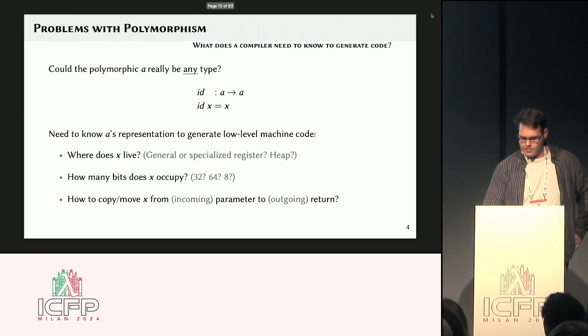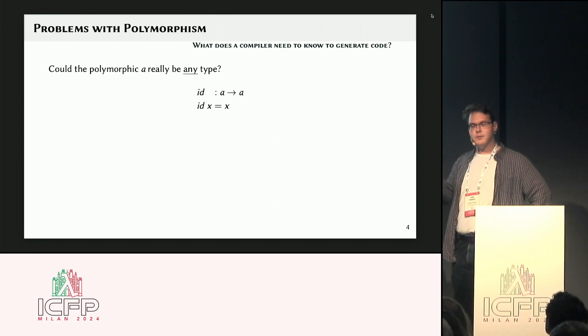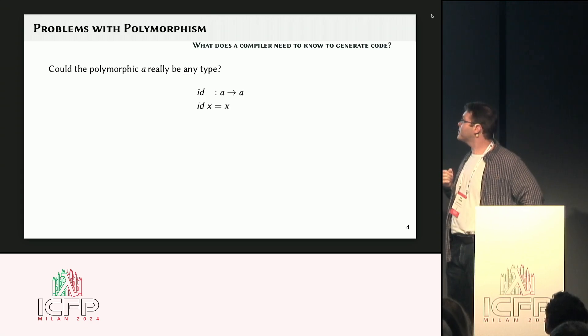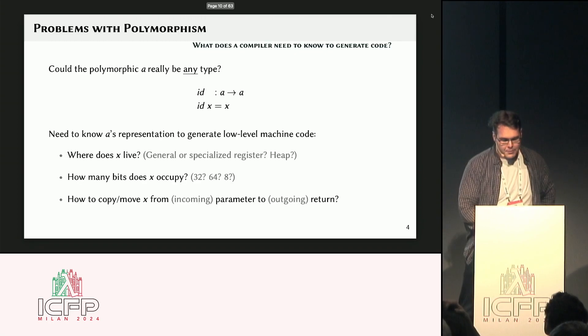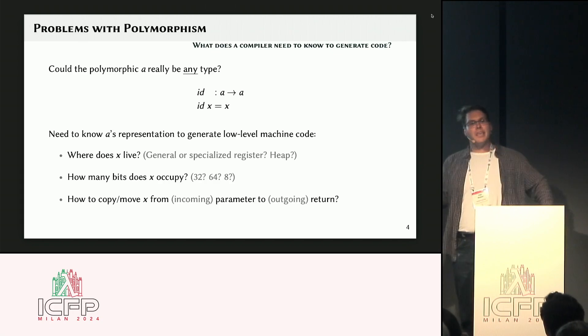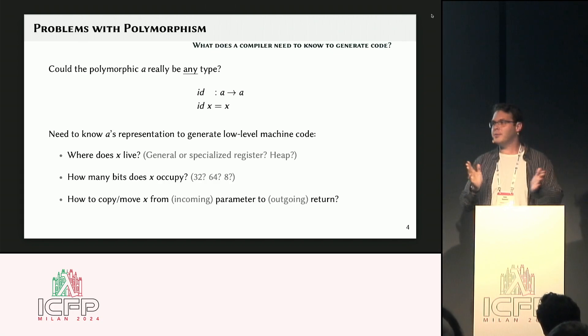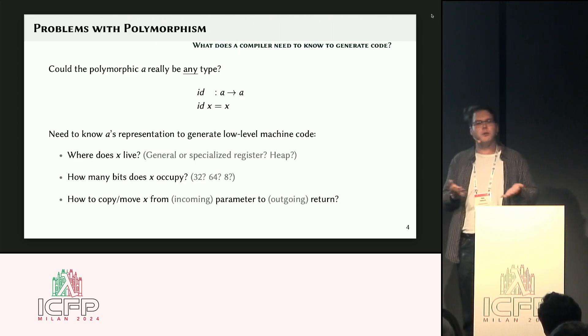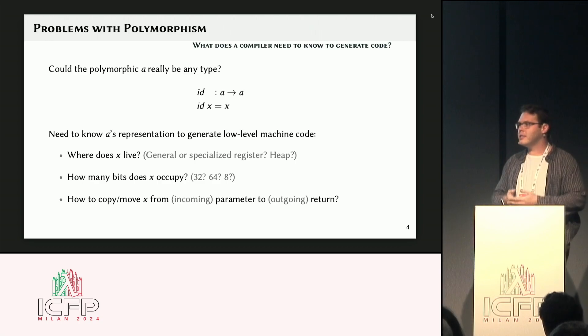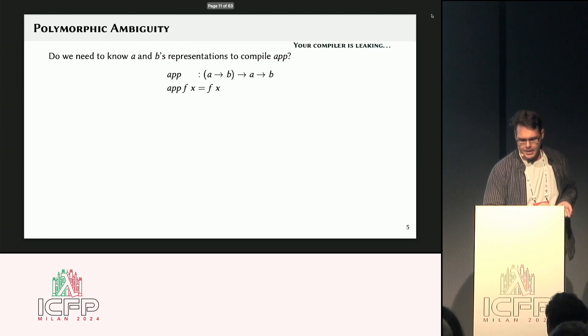But now, whoops, we're working in nice, high-level functional programming language, so I can have polymorphic definitions. And the question is, can this identity function really work with any type? Well, obviously not, because, you know, if X could be represented in a variety of different ways, and that means the machine code changes depending on its representation. So I need to know where it lives, how many bits does it occupy, how do I move it around? So that's information I need to know how to compile.